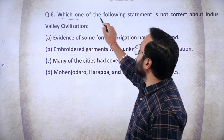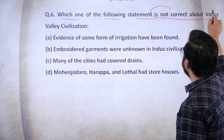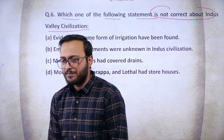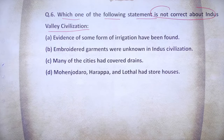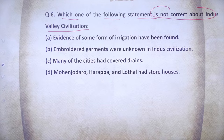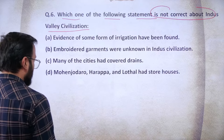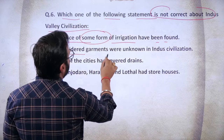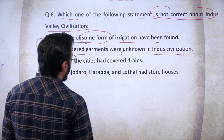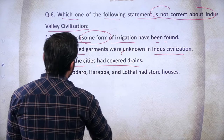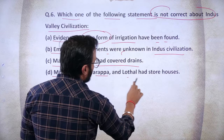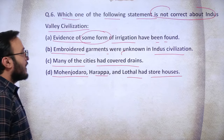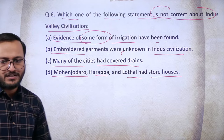Question 6: Which of the following statements about the Indus Valley Civilization is NOT correct? Statement 1 — evidence of some form of irrigation has been found; Statement 2 — embroidered garments were unknown in the Indus civilization; Statement 3 — many cities had covered drains; Statement 4 — Mohenjo-daro, Harappa, and Lothal had storehouses.